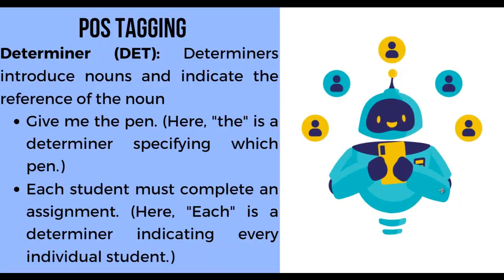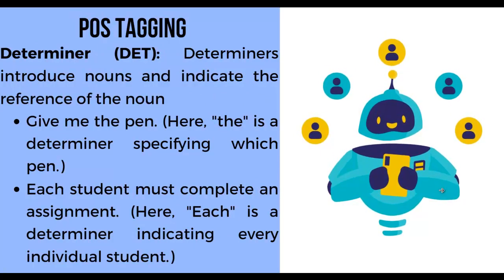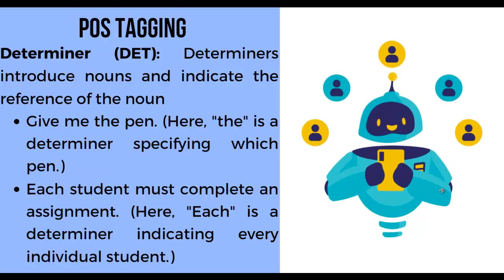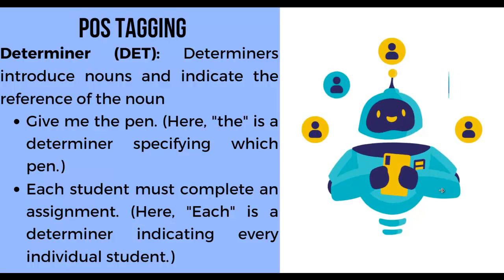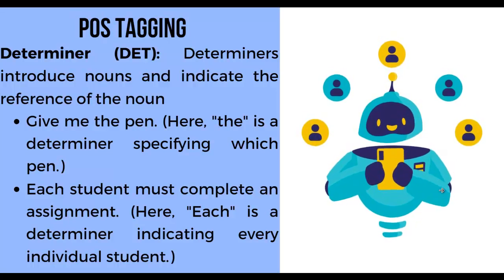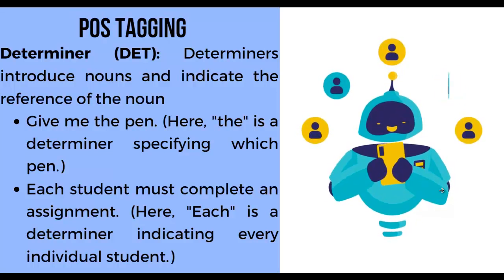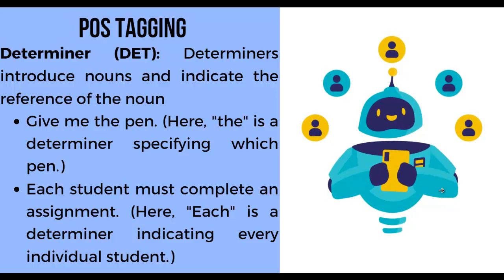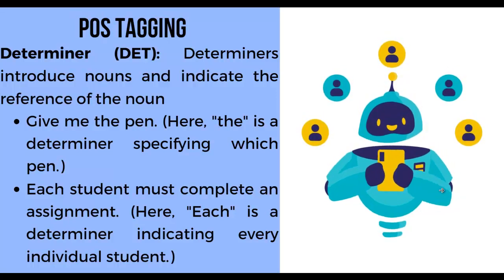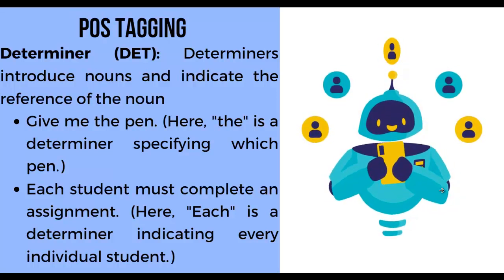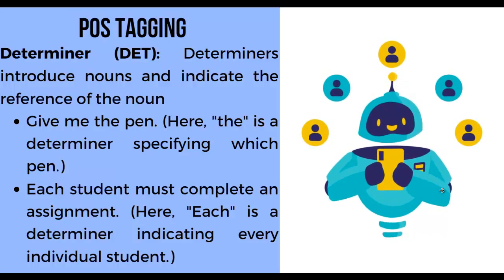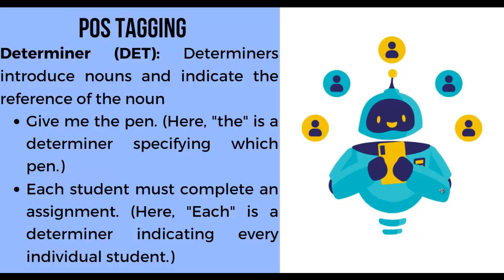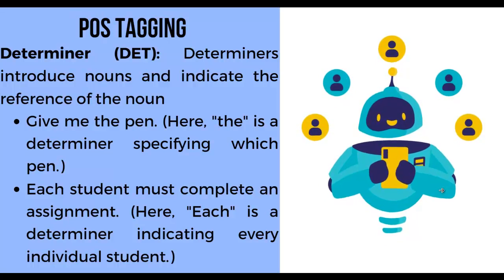Next, determiner. Determiners introduce nouns and indicate the reference of the noun. First example: 'Give me the pen' — here, 'the' is a determiner specifying which pen. Second example: 'Each student must complete an assignment' — here, 'each' is a determiner indicating every individual student.